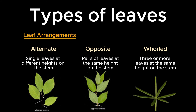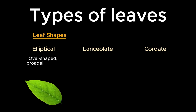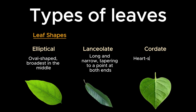Based on shape, leaves are divided into elliptical, lanceolate, and cordate. Elliptical leaves are oval-shaped and broadest in the middle. Lanceolate leaves are long and narrow, tapering to a point at both ends. Cordate leaves are heart-shaped with a distinct notch at the base.